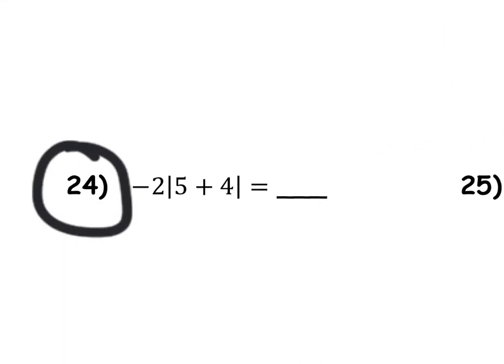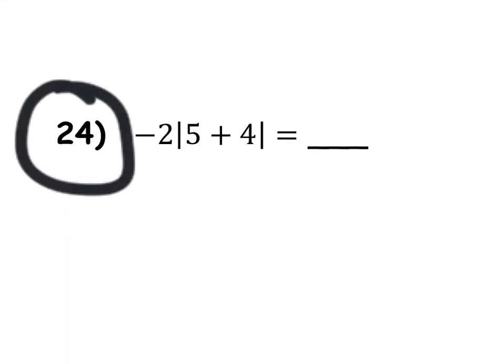Let's do one more, number 24. Let's work inside the absolute value first. 5 plus 4 is 9, so this becomes negative 2 times the absolute value of 9. Well, the absolute value of 9 is just 9 still. So this becomes negative 2 times 9, and negative 2 times 9 is negative 18.